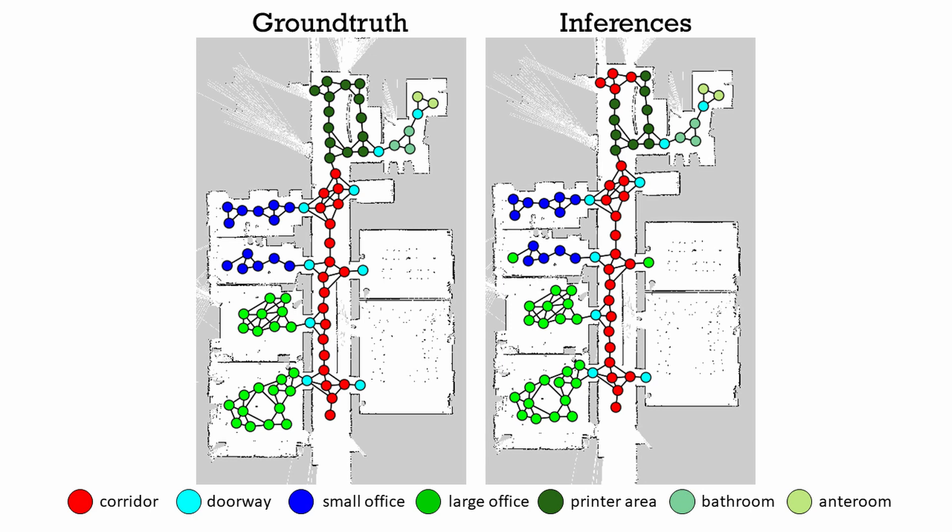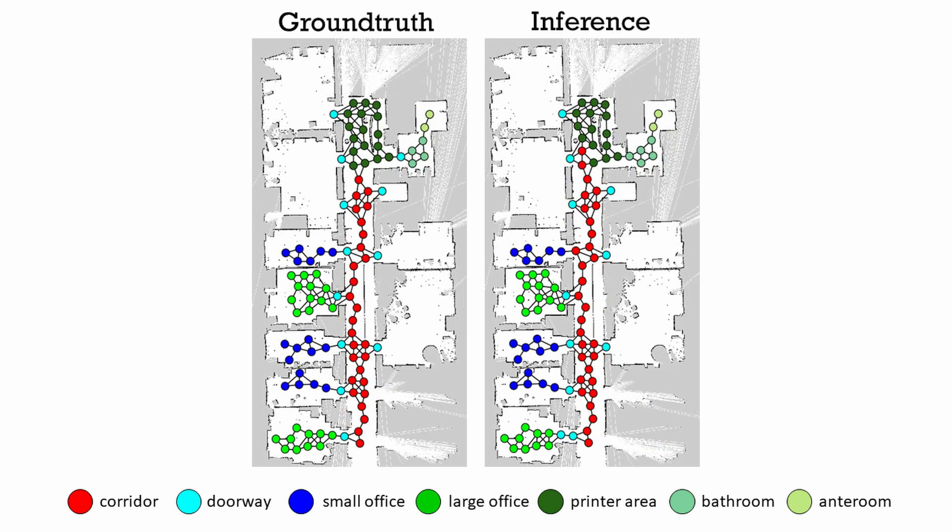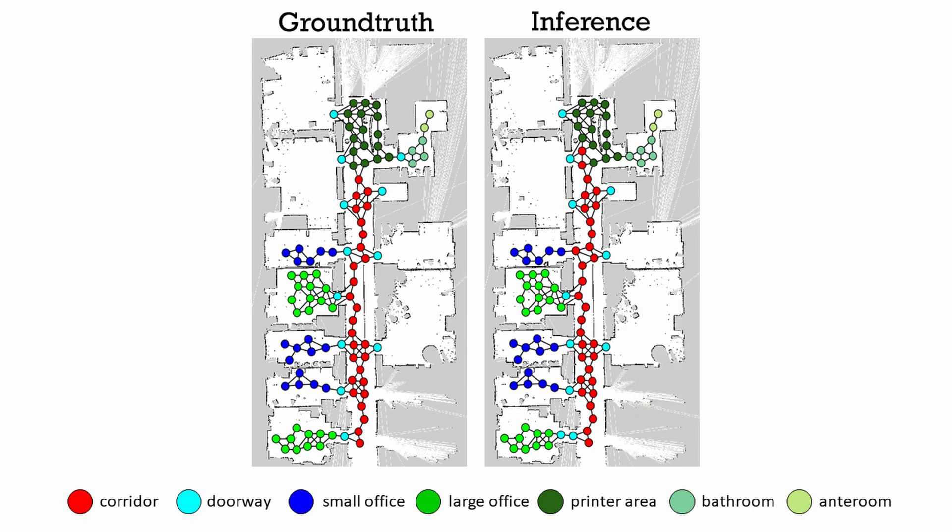The ground truth is shown on the left, while the image on the right shows the most likely semantic class as inferred by the network. The network successfully inferred the semantics of 93% of places in our test environments. For results on novelty detection we refer the viewer to our paper.